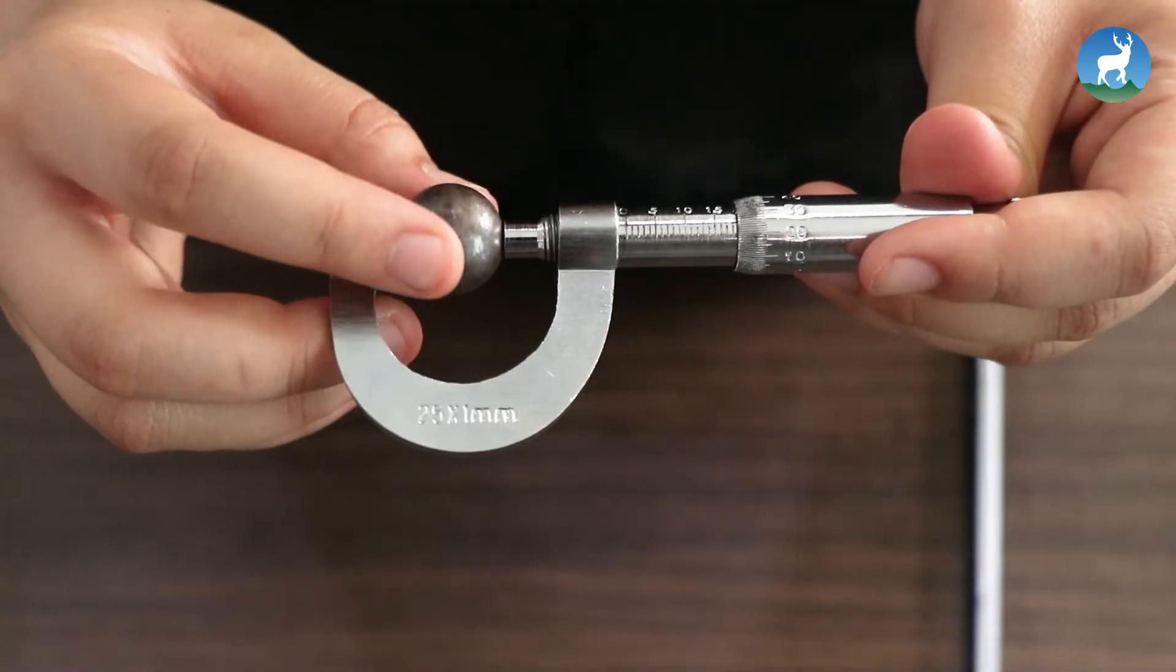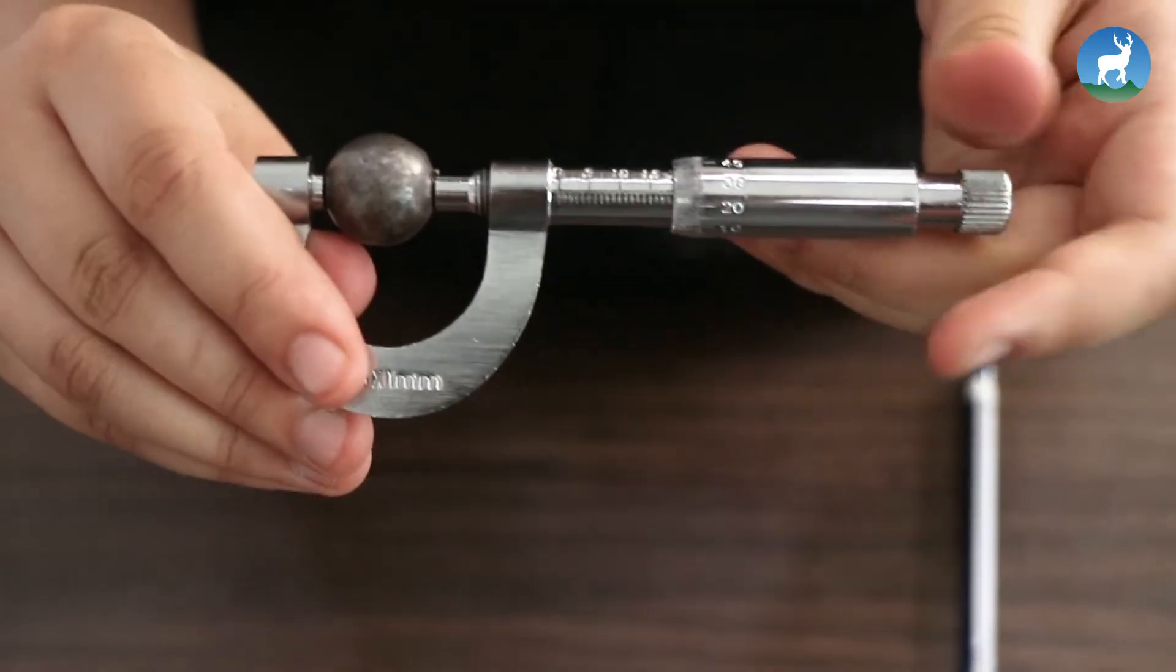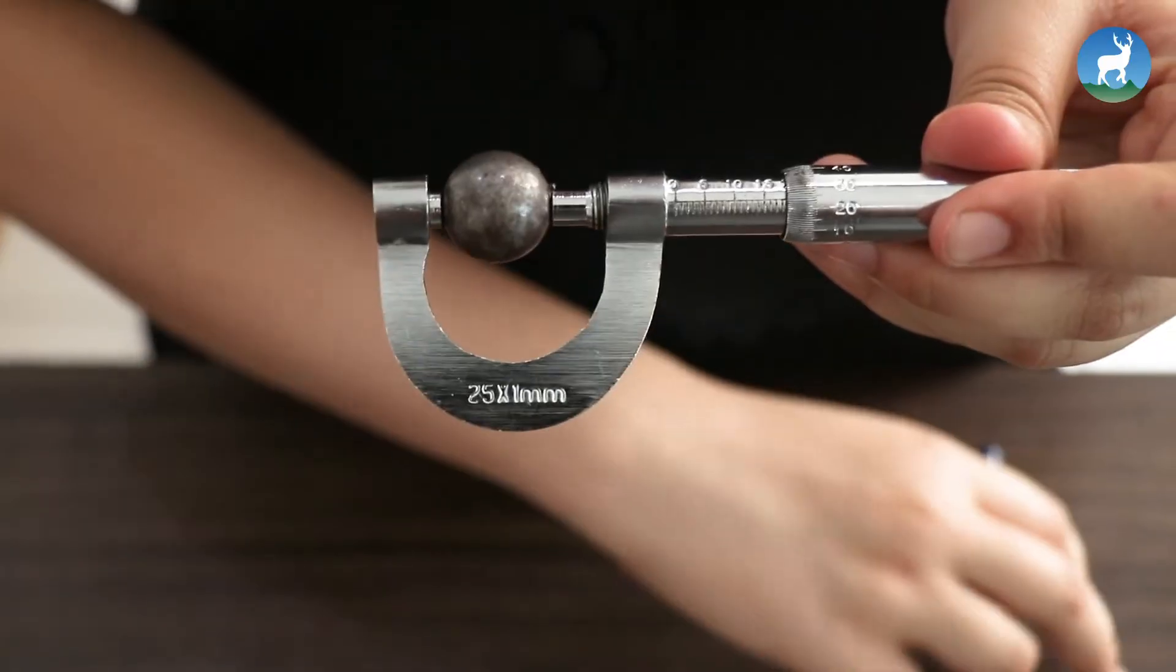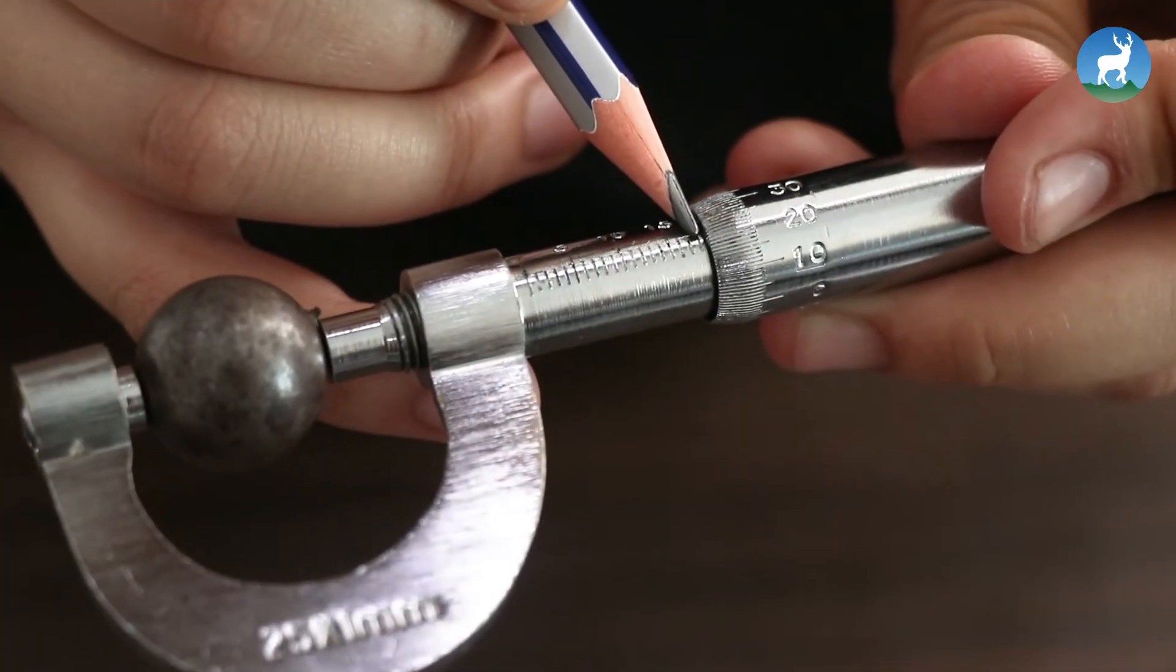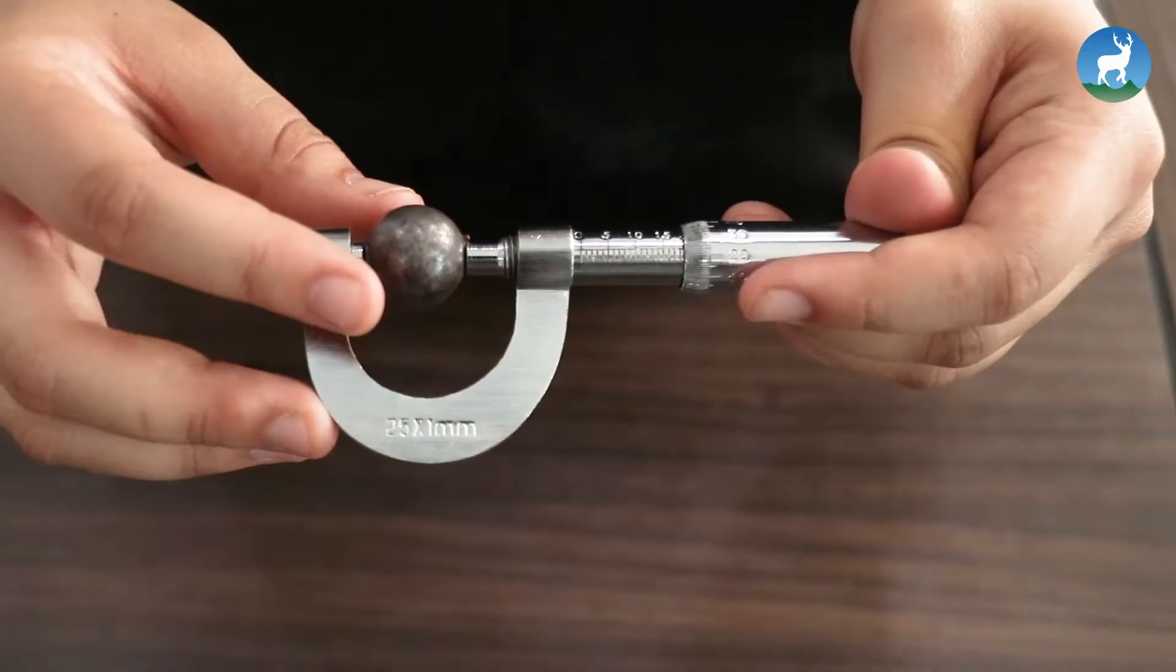First, place the spherical bob in between anvil and spindle perfectly. Then, note the mean scale and circular scale reading. Repeat this process four times by rotating the bob in different direction.